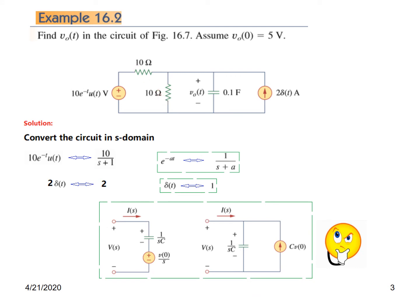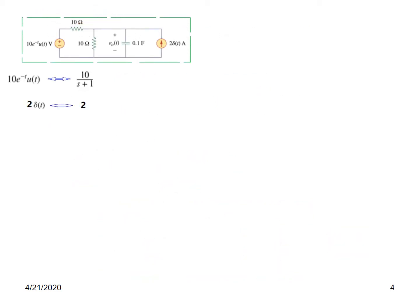The resistor will not change, but the capacitor will. As we learned in the previous video, there are two possible ways to represent a capacitor in the s-domain. Since the circuit has parallel elements, we prefer the parallel equivalent representation. It's not that the other form won't work — it just makes solving slightly more difficult — so for ease we'll use the parallel form.